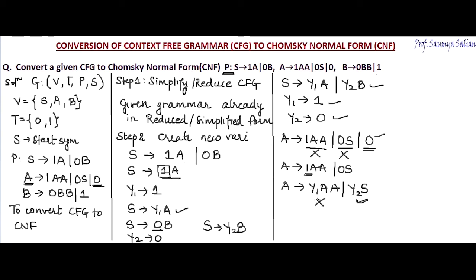However, A deriving y1AA is still not in CNF because it is a combination of three variables and I need exactly two. So I create a new variable y3 deriving AA, and substitute y3 back into A, giving A→y1y3. So A now derives y1y3, or y2S, or 0. That is how A is converted into CNF form.